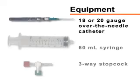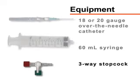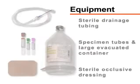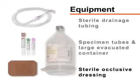For the collection of pleural fluid, you will need an 18 to 20 gauge over-the-needle catheter, a 60 milliliter syringe, and a 3-way stopcock. You will also need sterile drainage tubing, specimen tubes and a large evacuated container, and a sterile occlusive dressing.